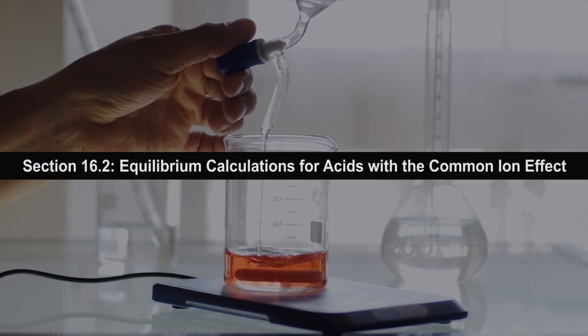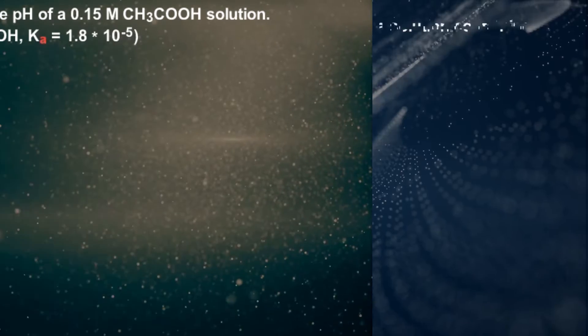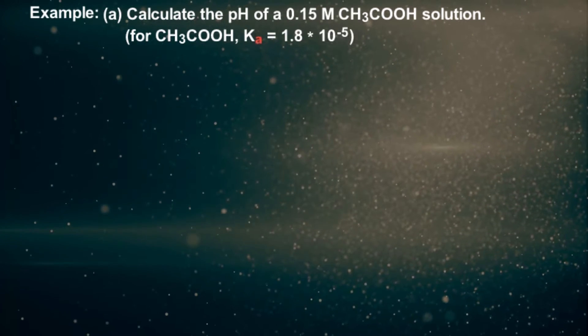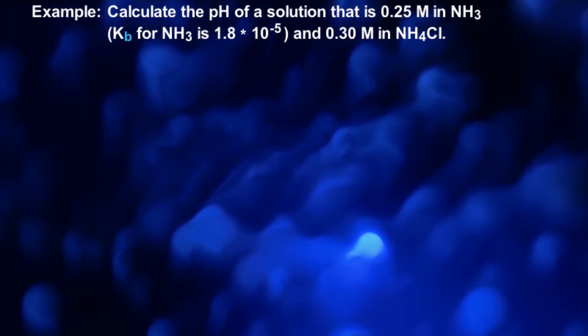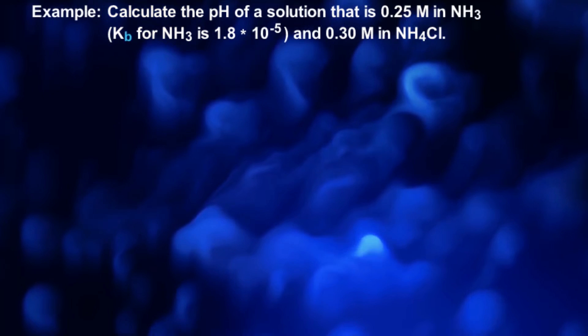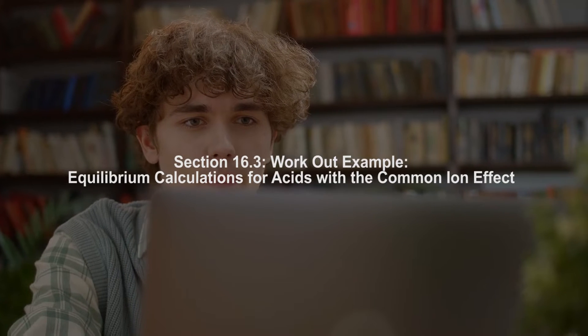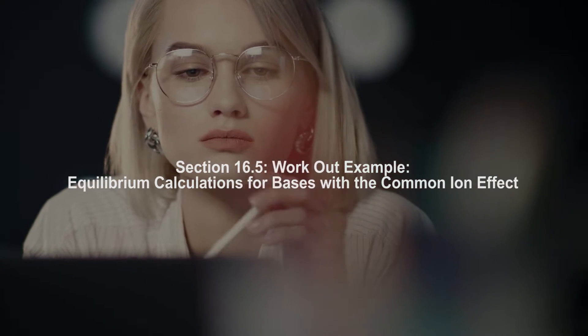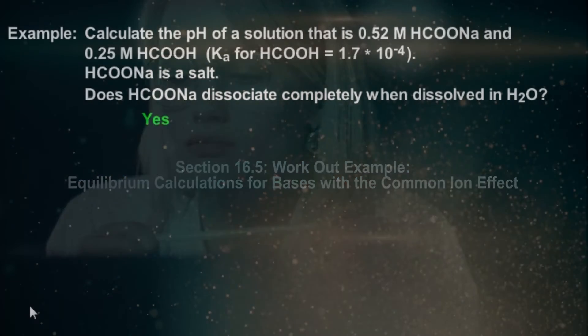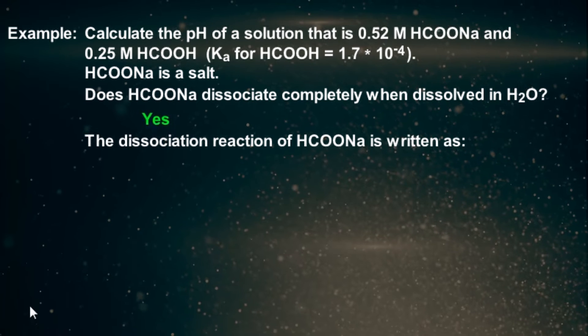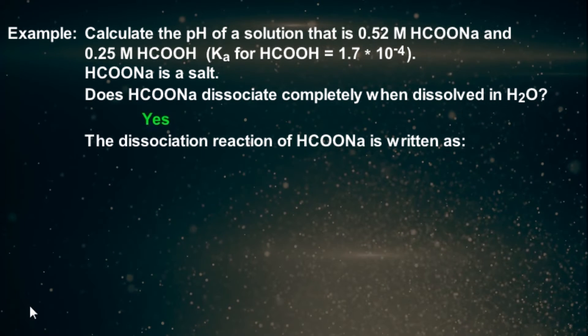In sections 16.2 and 16.4, equilibrium calculations for acids and bases with the common ion effect is covered with examples. In sections 16.3 and 16.5, workout examples are offered for equilibrium calculations with common ion effect for acids and bases.